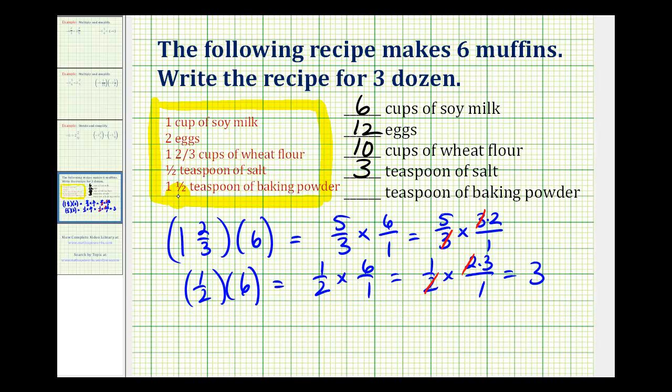And then for the amount of baking powder, we would have one and one-half times six. Well, one and one-half as an improper fraction would be two times one plus one. So that'd be three over two times six over one.